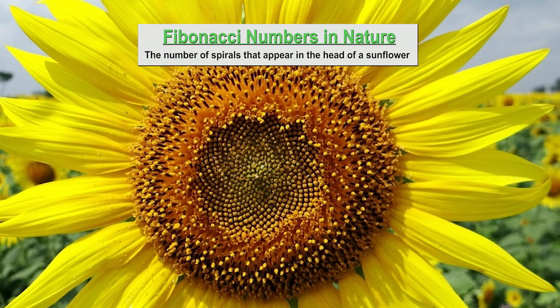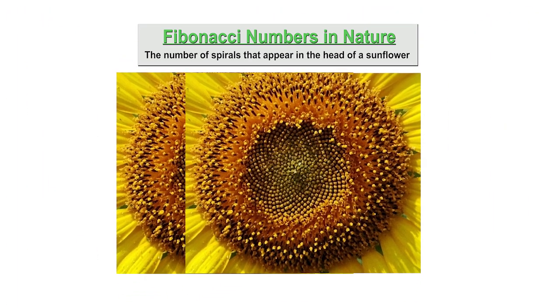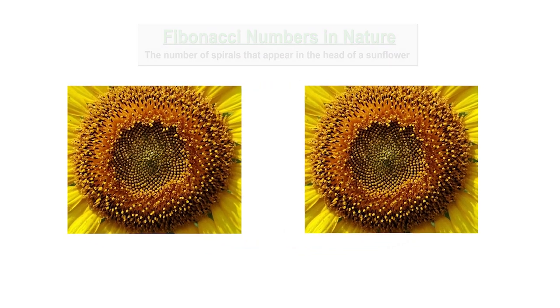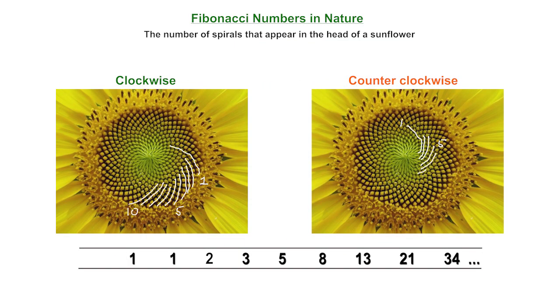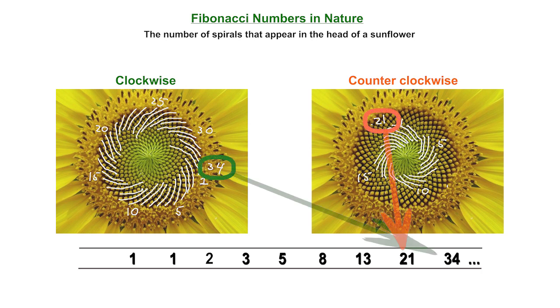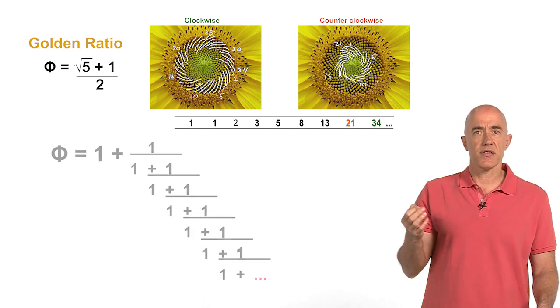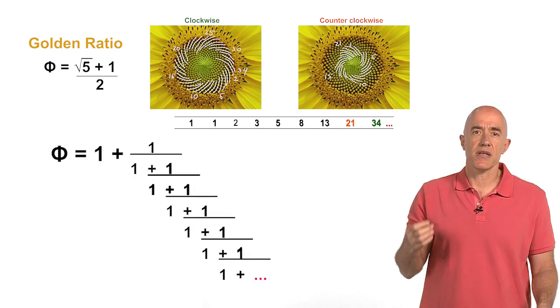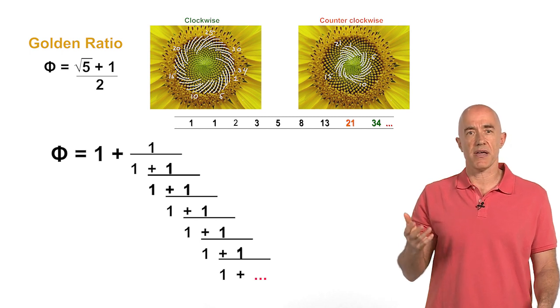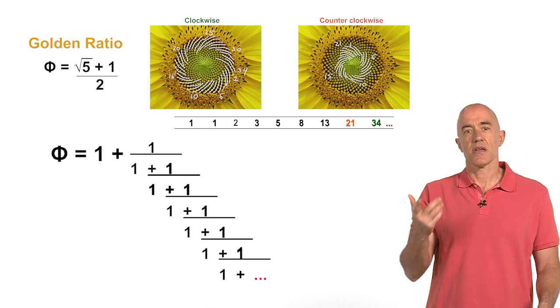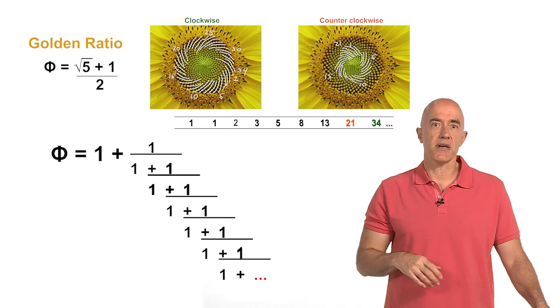One of my favorite examples has to do with the arrangement of florets, the small little flowers in the head of a sunflower. The Fibonacci numbers appear as the number of spirals seen in the head. And their appearance here is related to the relationship to the golden ratio, this special number square root of five plus one divided by two. This is an irrational number that turns out to be very difficult to approximate by a rational number. We'll talk about that in some detail in this course.